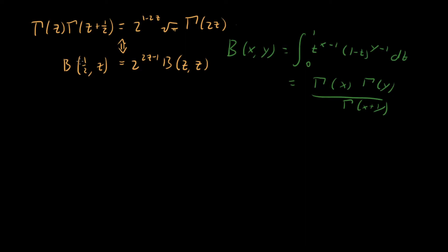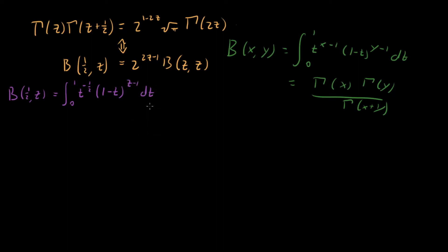Let's start with the left hand side and try to show it equals the right hand term. Beta of one half comma z is equal to the integral from zero to one of t to the minus one half — since one half minus one is minus one half — times one minus t raised to the z minus one, dt. Now let's use a change of variables: u equals root t. The idea is that we have a one over root t out front, which is annoying, so it'd be great to get rid of that.